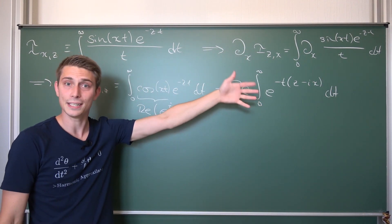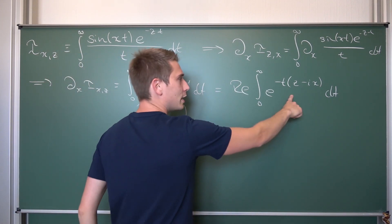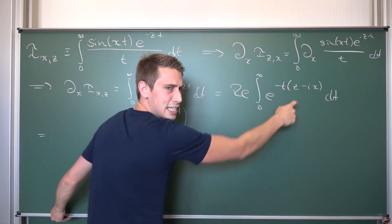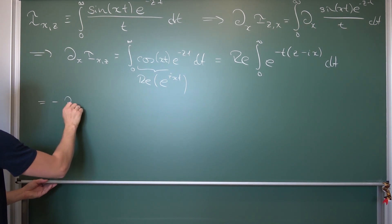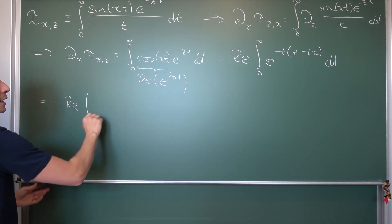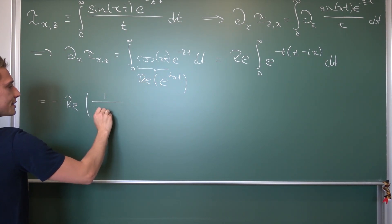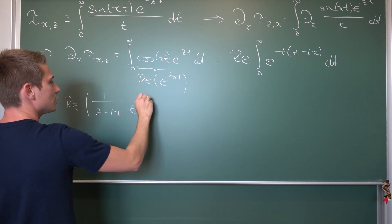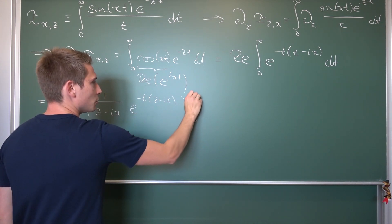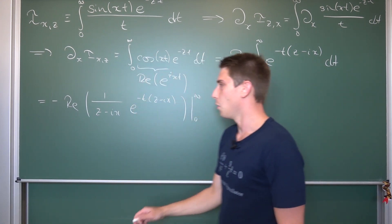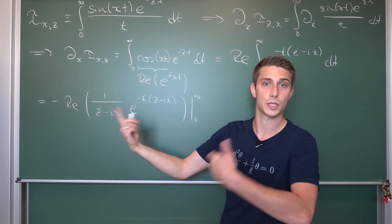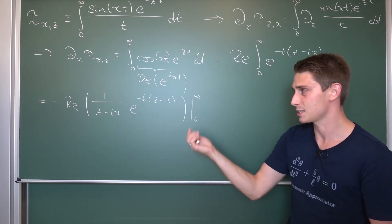This looks really tame — no need for integration by parts. We can just integrate the exponential function, leaving us with negative the real part of 1/(z − ix) · e^(−t(z − ix)), evaluated from 0 to infinity. Now we have a reciprocal complex number, which is ugly, so we are going to rationalize the denominator by expanding this fraction by its complex conjugate.